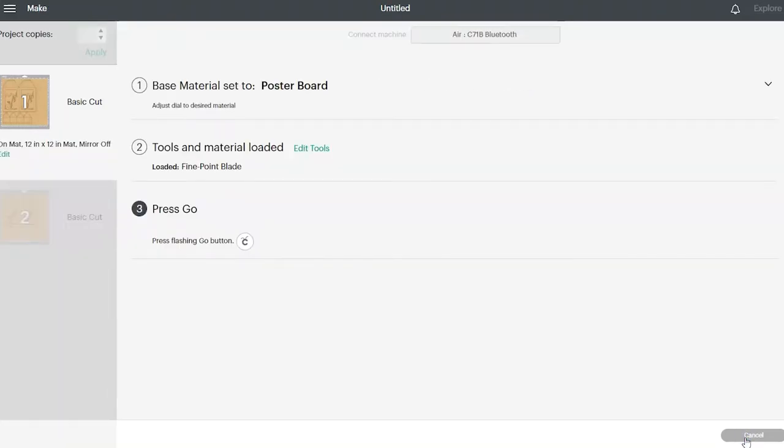Once Design Space finds your machine, you'll be taken to this screen. So as I mentioned, I'm using wood veneer cardstock and I found the best setting for that was poster board. So you'll have to adjust your machine depending on what kind of material you're cutting. And now you can go load your cutting mat.